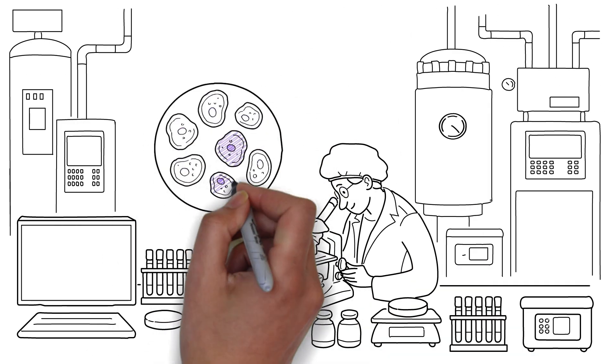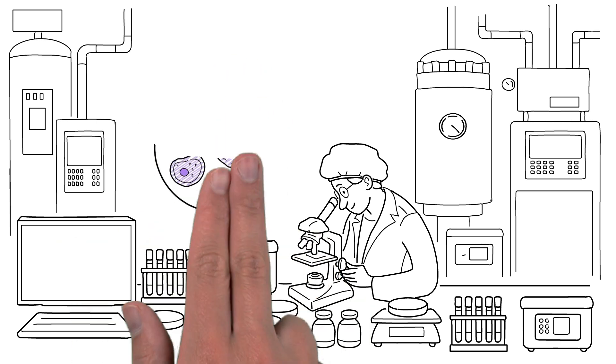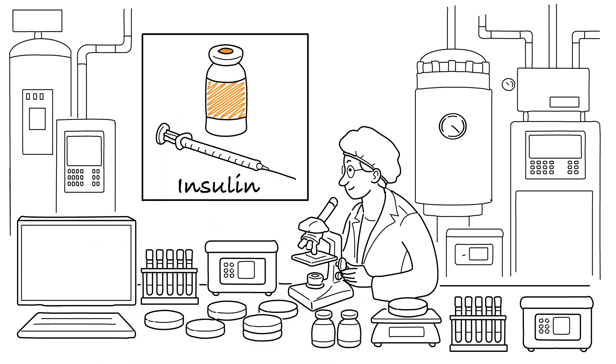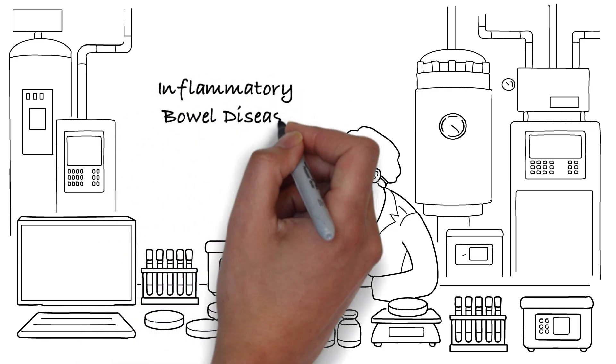Biologic drugs, on the other hand, are made from living cells. This makes them very complex. Insulin is an example of a biologic drug you may have heard of. Biologics can treat many health problems, including inflammatory bowel disease or IBD.